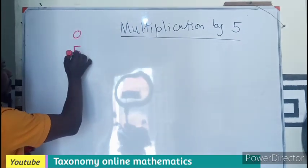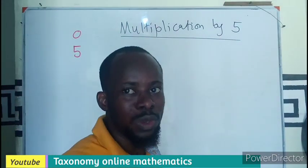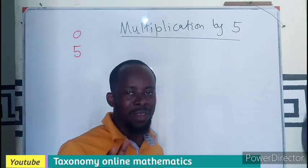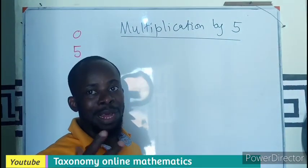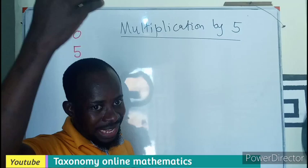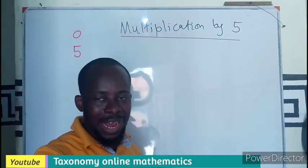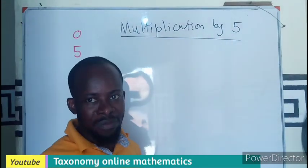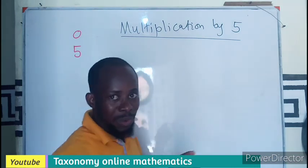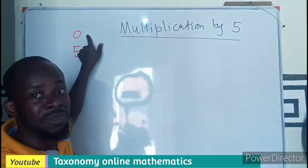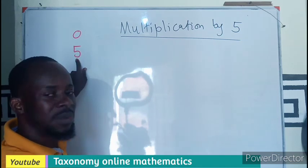...zero or 5 as the ones digit. What I mean is that if you are going to get a two-digit number or three-digit number, the last digit will always be either 0 or 5. Zero if the number you are multiplying is an even number. You will get 5 if the number you are multiplying is an odd number.